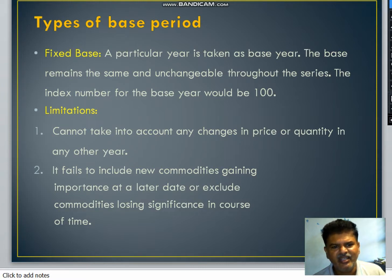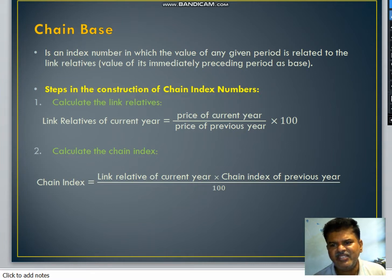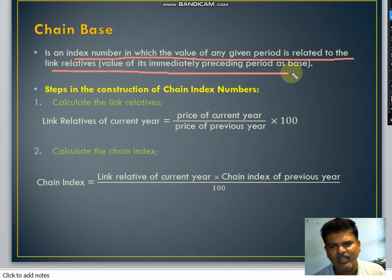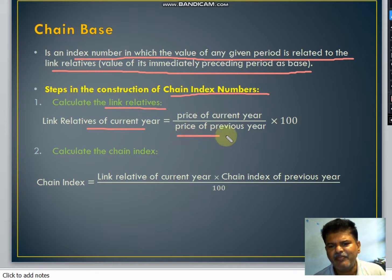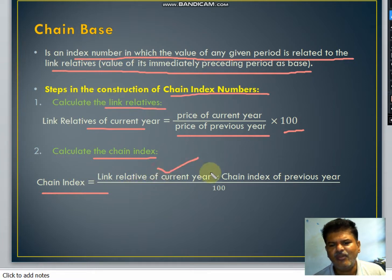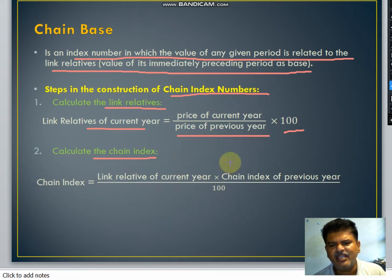In the chain base year, the index number for any given period is related to the link relatives — that is, the value of its immediately preceding period is used as the base. The steps for calculating the chain base index number are: First, calculate the link relative: Link Relative = (Price of current year ÷ Price of previous year) × 100. Second, calculate the chain index: Chain Index = (Link Relative of current year × Chain Index of previous year) ÷ 100.